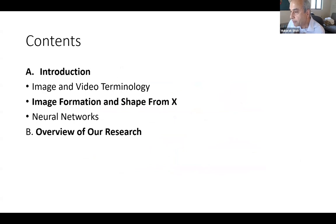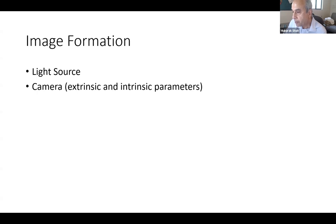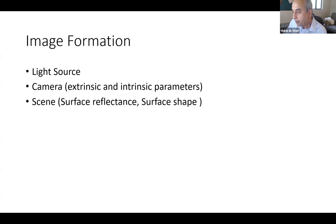Now let's talk about image formation. In order to form an image we need a light source — if there's no light we cannot take an image, it's completely dark. We also need a camera, which has intrinsic parameters like focal length and axis parameters — where the camera is located and its orientation. And of course there has to be a scene with objects, reflectance, and surfaces.